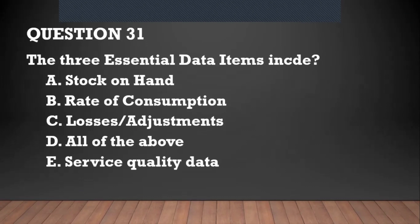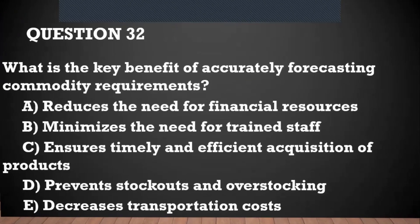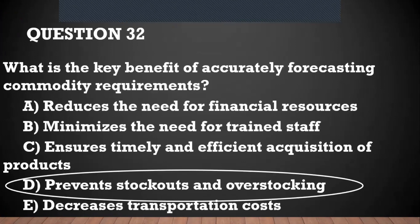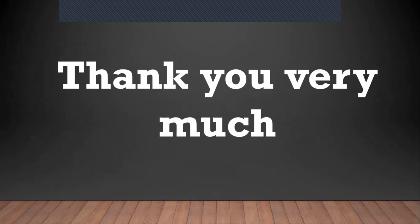Question number thirty-one: the three essential data items include stock on hand — correct; rate of consumption — correct; and adjustments — correct. So all of the above is correct. Question number thirty-two: what is the key benefit of accurate forecasting of quality requirements? One key benefit is that you can prevent stock-out and overstocking. Thank you very much for being with us — God bless you and have the best in your exams. Take care.